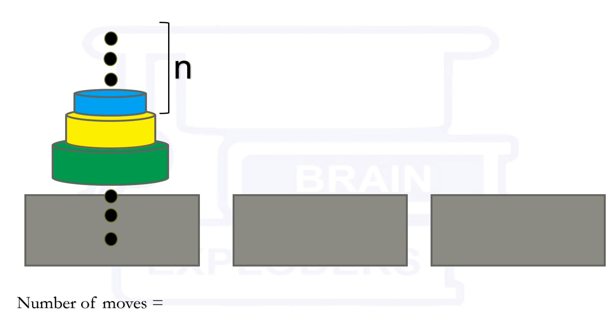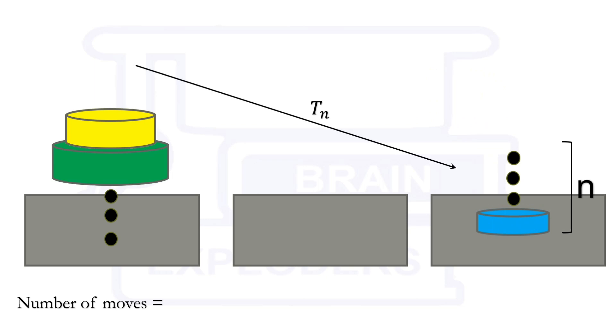Now, let's count the number of moves. Here, if we displace the above n disks, then we have assumed that there are Tn number of moves occurring here. And now, let's put another disk on the empty space.